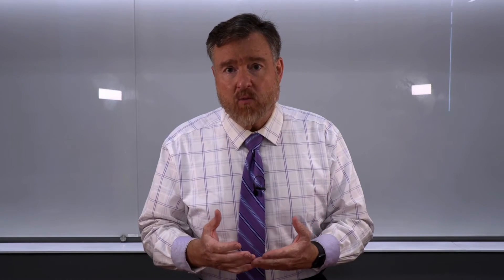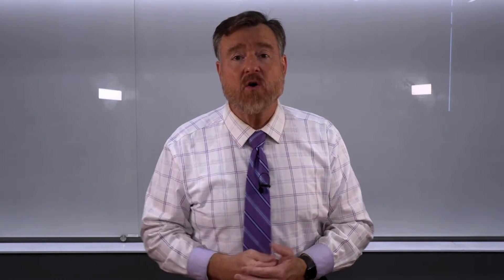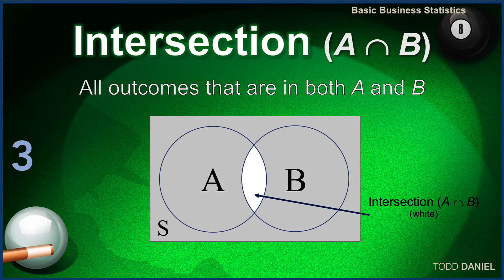In the union example, we were considering all possible outcomes in all events. What about outcomes that are specific to both events? That is called an intersection. An intersection includes all outcomes that are in both A and B.